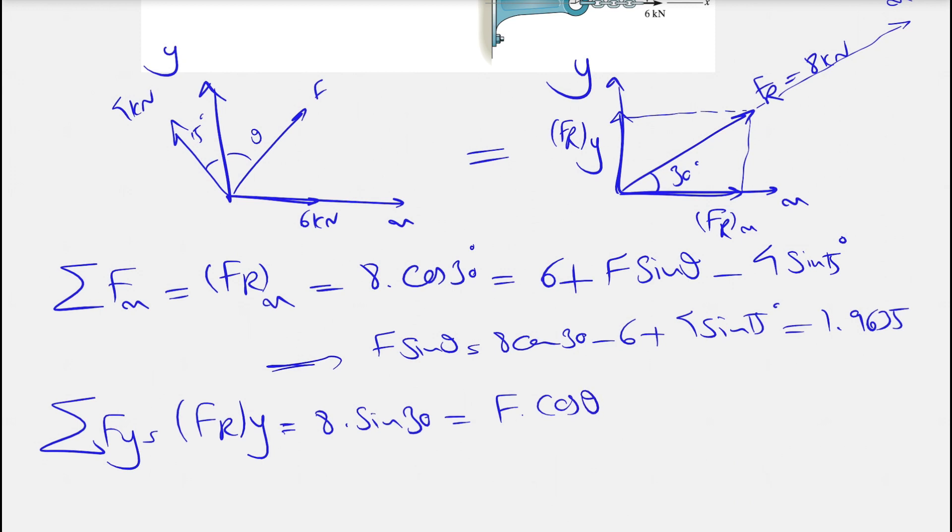For the F, this time we'll have F cosine of theta. And for the 4 kN force, this time we'll have a positive, since it's in the positive direction of the y-axis, and we'll have 4 cosine of 15 degrees. And if we do the same thing, we can find F cosine of theta equals 8 sine of 30 minus 4 cosine of 15 degrees.